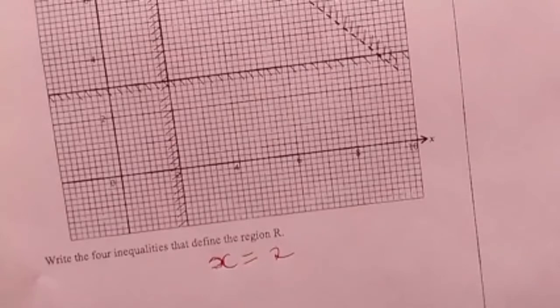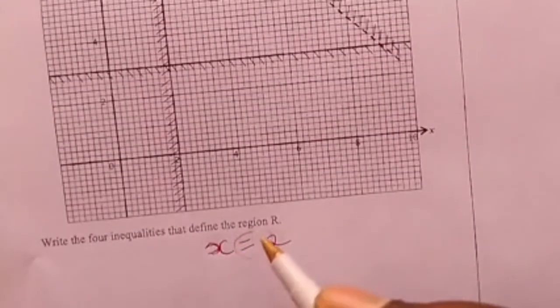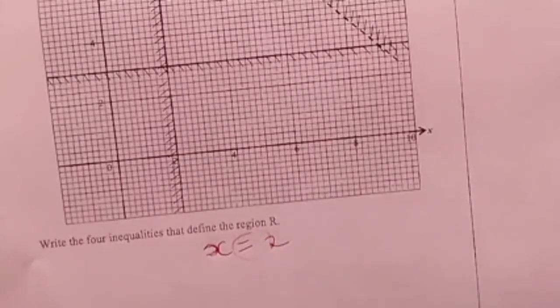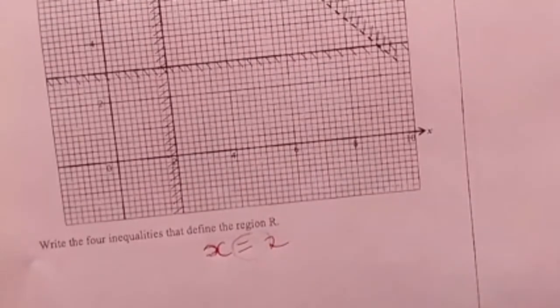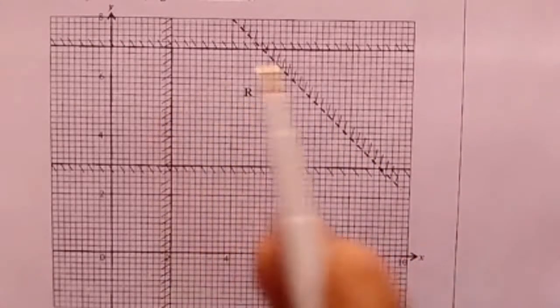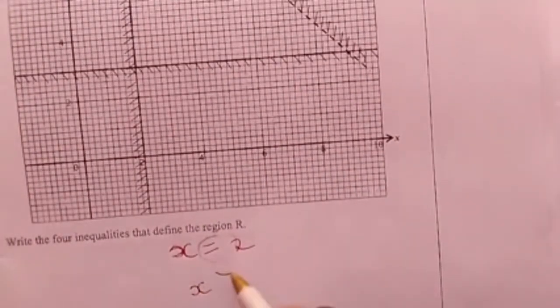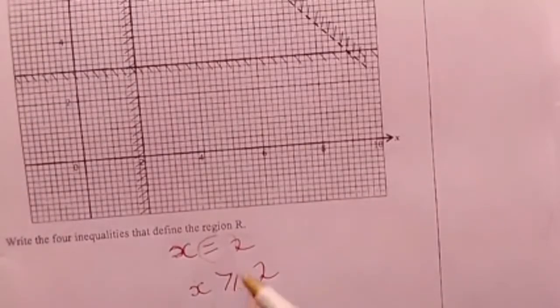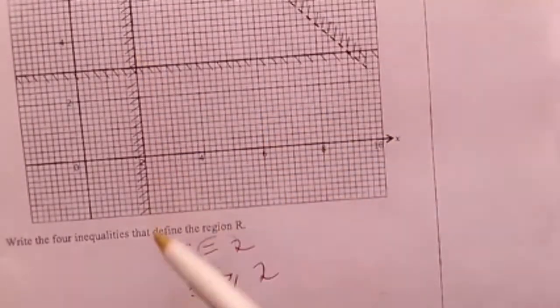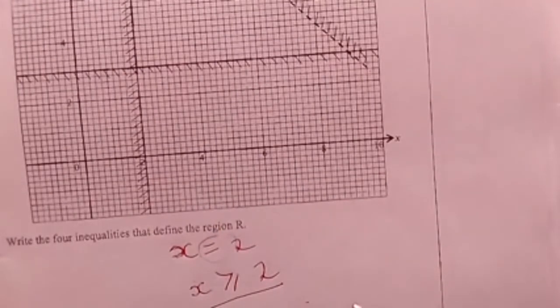X is equal to 2. I now need to remove this equal sign and replace it with the inequality sign which supports the position of R. R is on the right side and the right side means greater. So it means that X is greater than or equal to 2. I am using 'or equal to' because the line is solid.